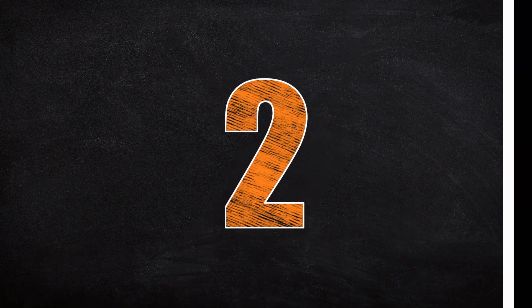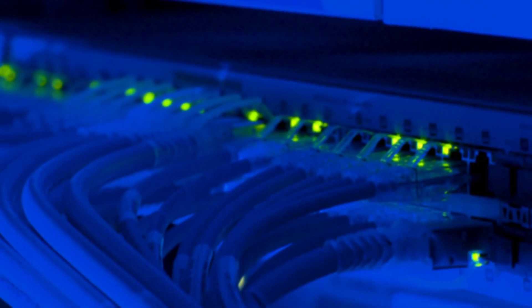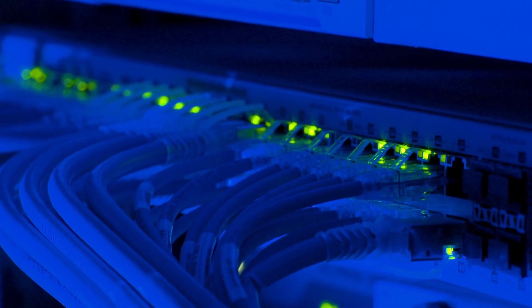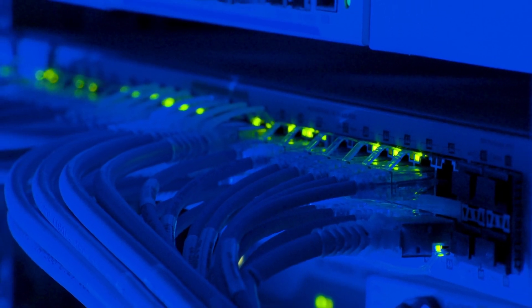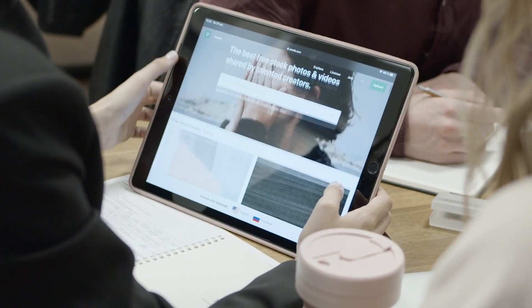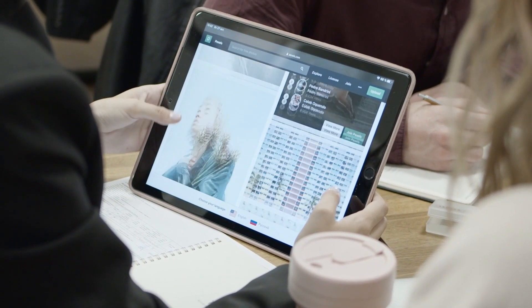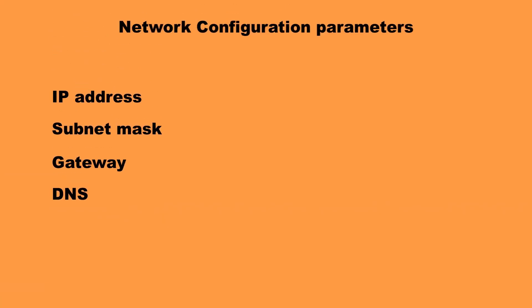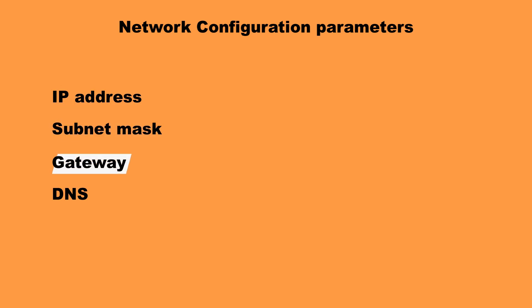What are these parameters? Networks today, including the internet, run on a suite of protocols which has existed since the 1980s known as TCP/IP. For a device to connect to a TCP/IP network, it must first possess what is called Network Configuration Parameters, which includes an IP address, a subnet mask, the IP address for a default gateway, and most likely the IP address for a DNS server.